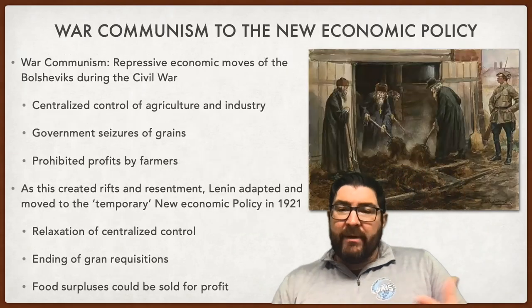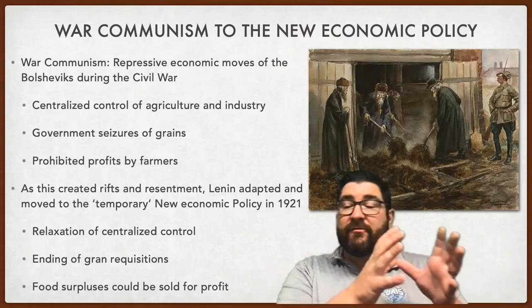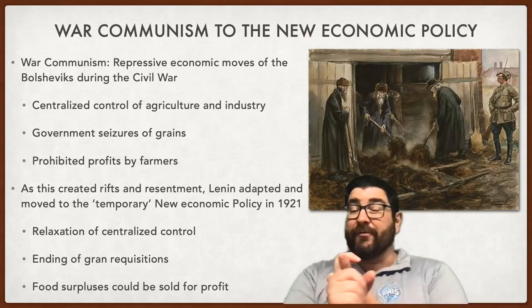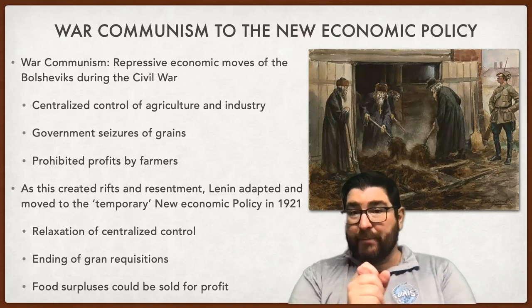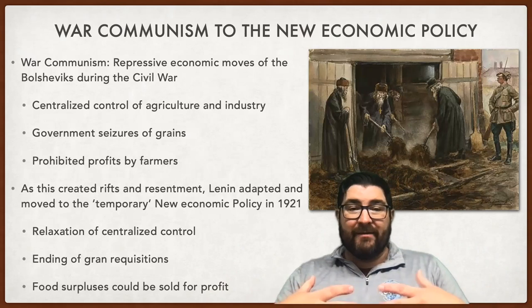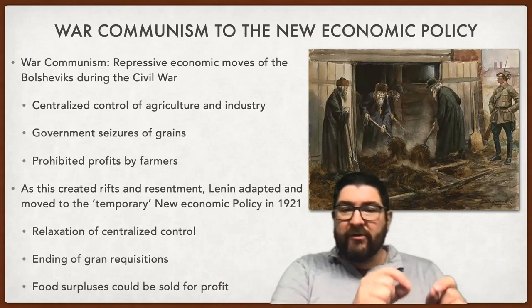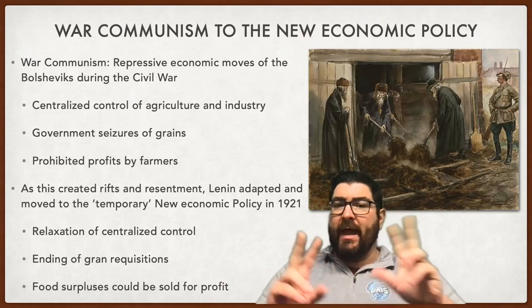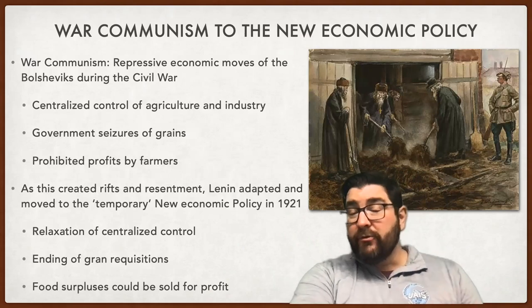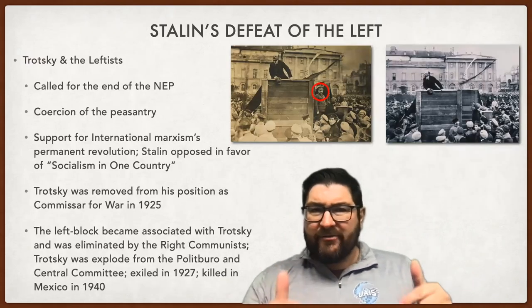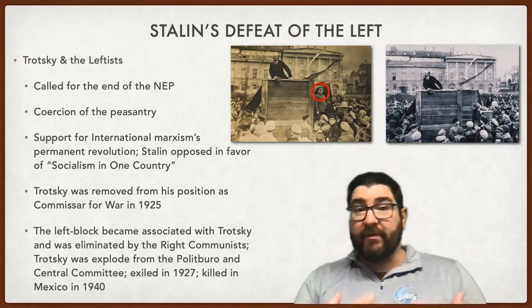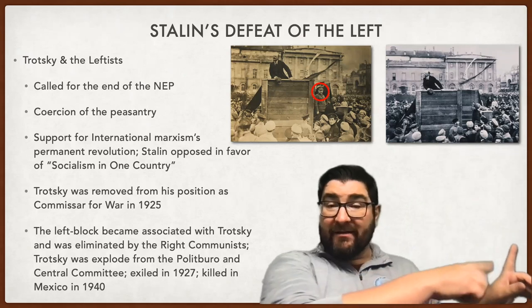War communism during the Russian Civil War was a series of repressive economic moves by the Bolsheviks to centralize control of agriculture and industry — including government seizure of grains and a prohibition on farmers' profits — with the goal of greater agricultural production for the state. This failed during the Civil War, and Lenin was forced to adopt the New Economic Policy: a temporary relaxation of government controls, ending grain requisitions and allowing food surpluses to be sold at a profit. This was to the consternation of Leon Trotsky and the leftists, who wanted an end to the NEP and more forceful collectivization.